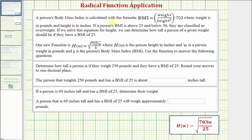A person's body mass index is calculated with the formula BMI equals weight divided by height squared times 703, where weight is in pounds and height is in inches. If a person's BMI is above 25 and below 30, they are classified as overweight.